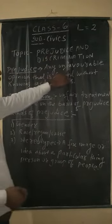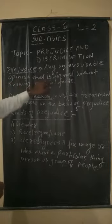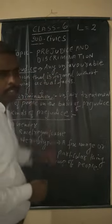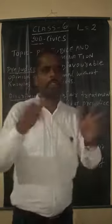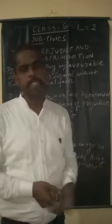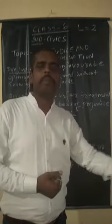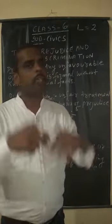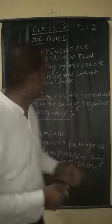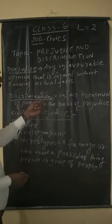Prejudice means any unfavorable opinion that is formed without knowing actual facts. We don't know any actual facts and yet we blame someone — saying he did this, he made a crime, he did a mistake — without knowing any facts about them. That process is known as prejudice.